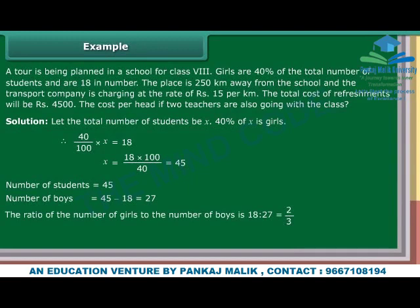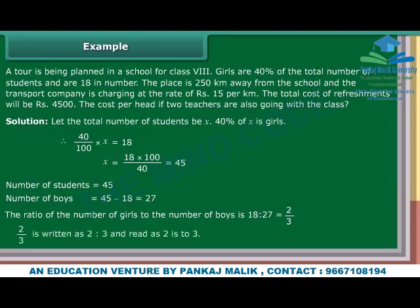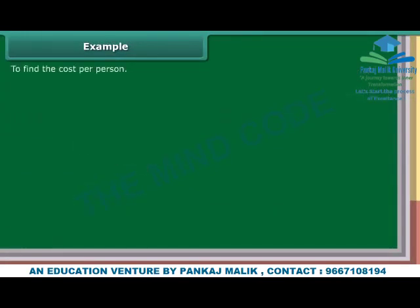The ratio of the number of girls to the number of boys is 18 is to 27, which is equal to 2 upon 3, written as 2:3 and read as 2 is to 3. To find the cost per person: